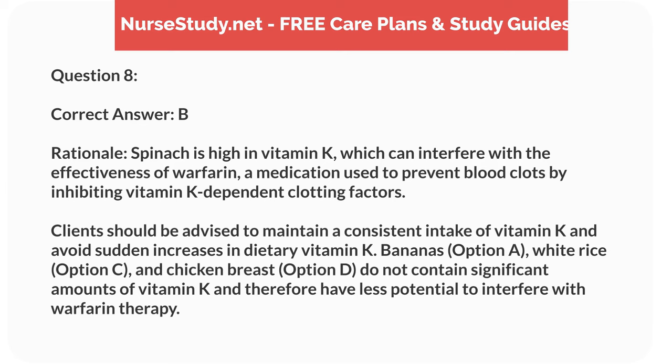Correct answer: B. Rationale: spinach is high in vitamin K, which can interfere with the effectiveness of warfarin, a medication used to prevent blood clots by inhibiting vitamin K-dependent clotting factors. Clients should be advised to maintain a consistent intake of vitamin K and avoid sudden increases in dietary vitamin K. Bananas, option A, white rice, option C, and chicken breast, option D, do not contain significant amounts of vitamin K and therefore have less potential to interfere with warfarin therapy.